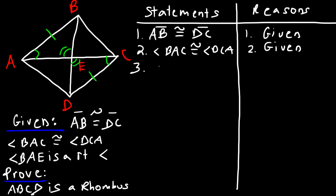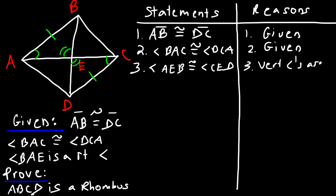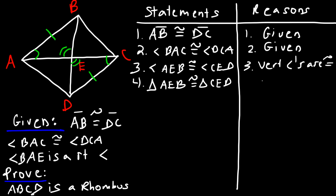We know that angles AEB and CED form vertical angles, so we can say angle AEB is congruent to angle CED by the Vertical Angle Theorem. Now we can prove that triangle AEB is congruent to triangle CED. The reason is the Angle-Angle-Side postulate, based on statements 3, 2, and 1.